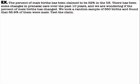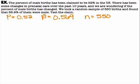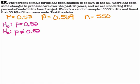Last example: The percent of male births has been claimed to be 52% in the US. Changes in prenatal care over the past 10 years prompt us to ask if the percentage has changed. A random sample of 550 births found 56.9% were male. Since the question asks if it changed — not increased or decreased — we use not equal to. Null hypothesis: P = 0.52; alternative hypothesis: P ≠ 0.52.